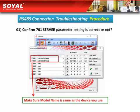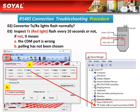If you find that your RS485 connection is unsuccessful, here are the solutions. First, go to confirm that the 701 server parameter settings are correct, and make sure that the model name you have chosen is correct. Second, observe the converter's TX or Rx light to check whether it is flashing normally or not.